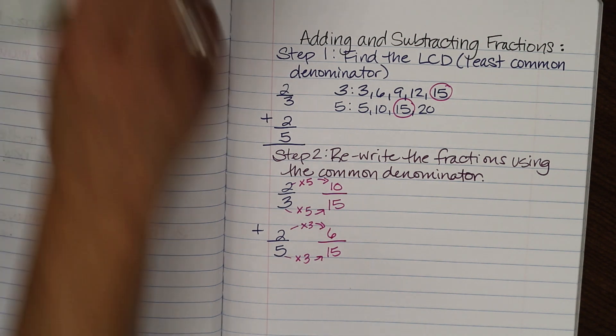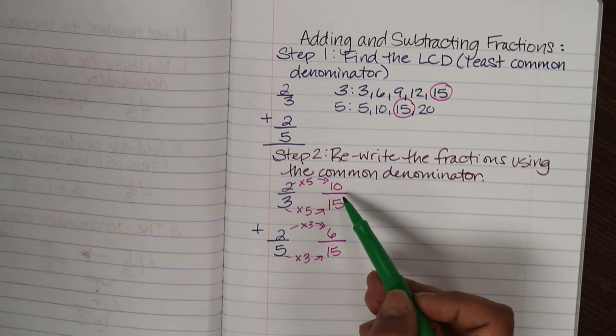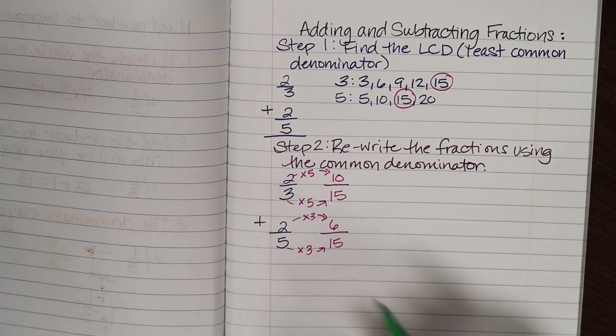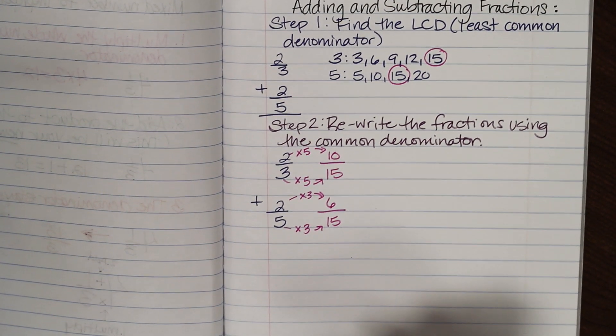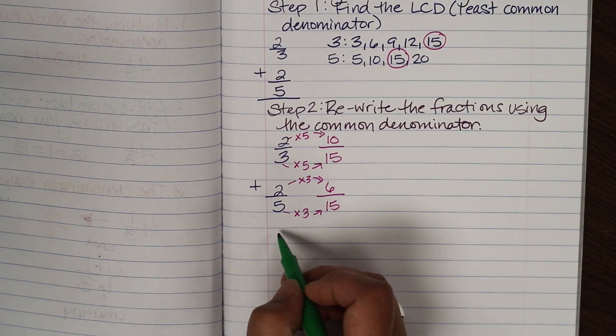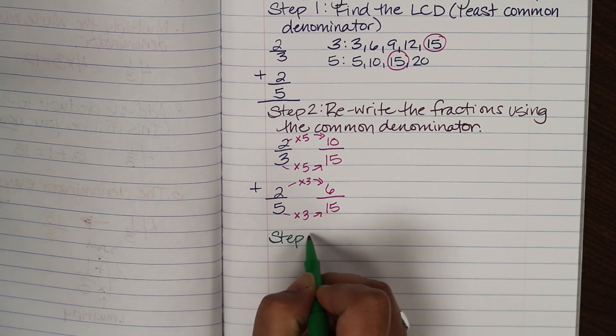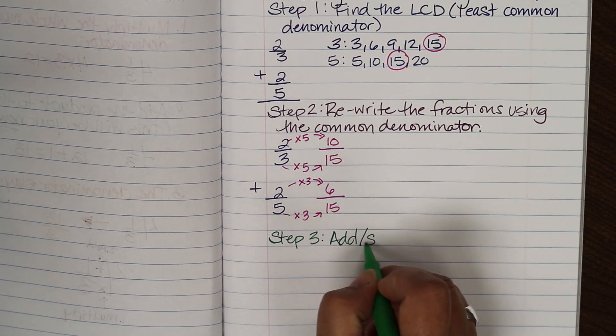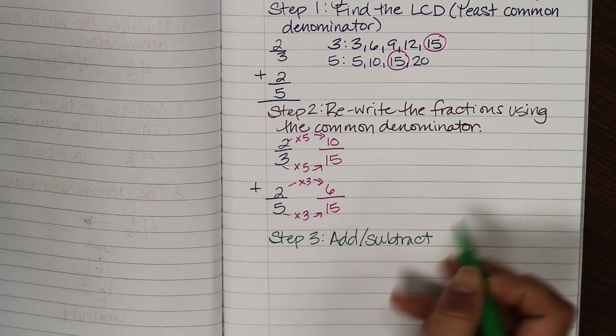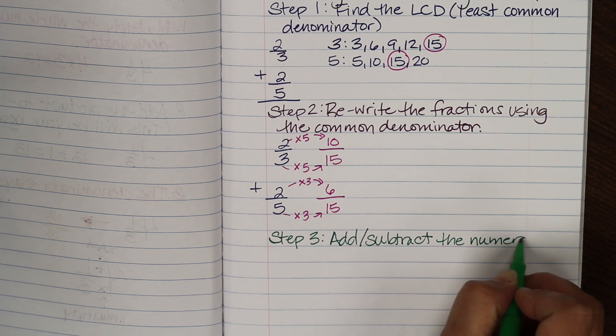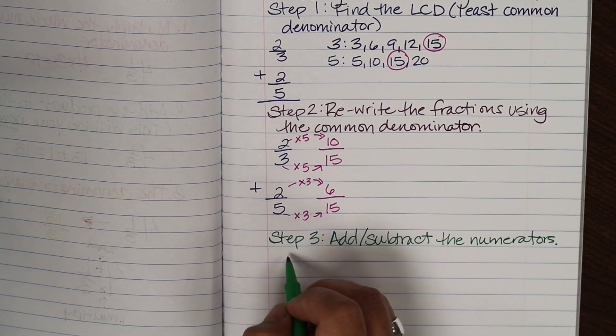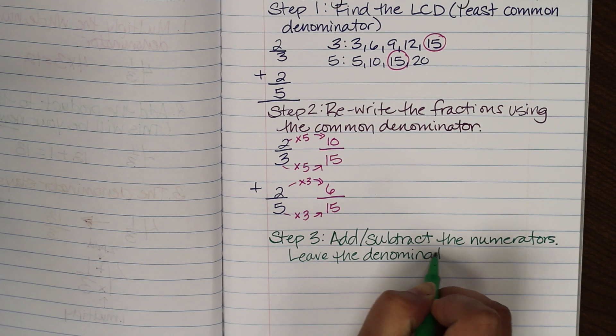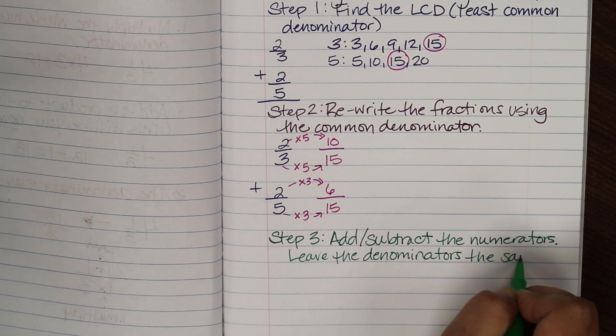So your last step is going to be step three. So I have my new equation. My new equation is ten fifteenths plus six fifteenths. So now I'm going to go to my very last step which is going to be basically add or subtract the numerators leaving the denominators the same. So go ahead and write on step three. Add or subtract, in this case we have an addition, add or subtract the numerators. We're going to leave the denominators the same.